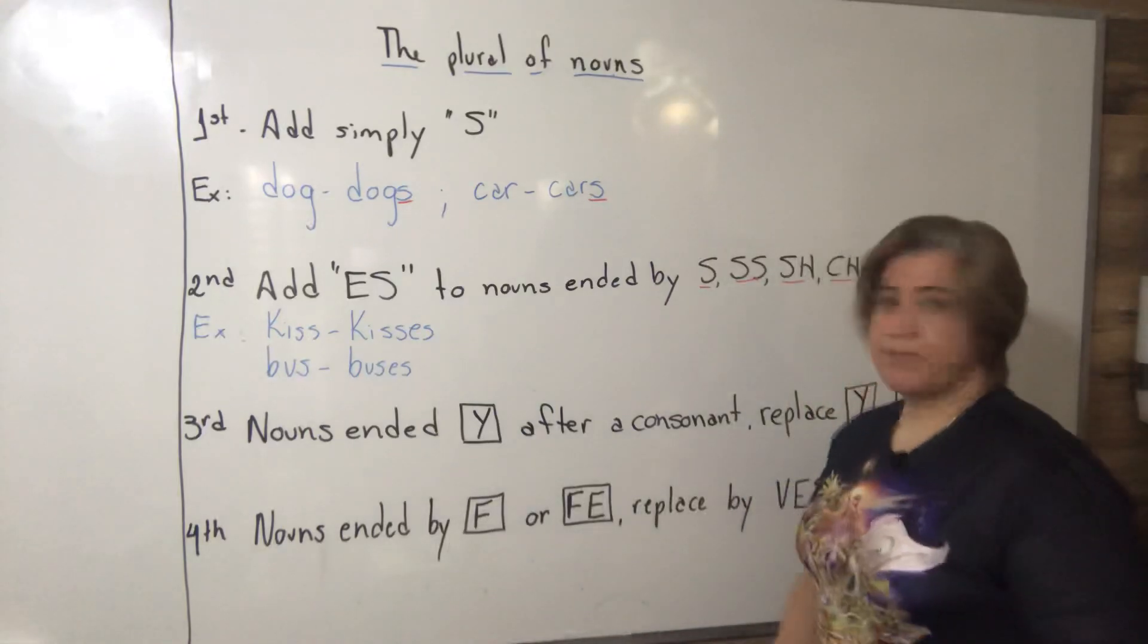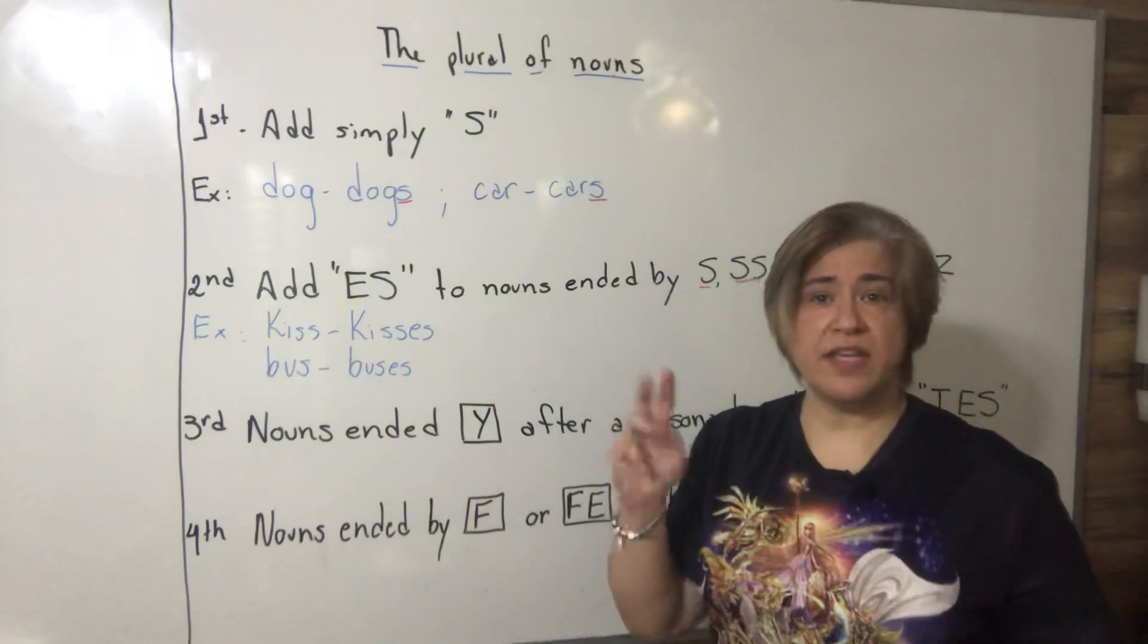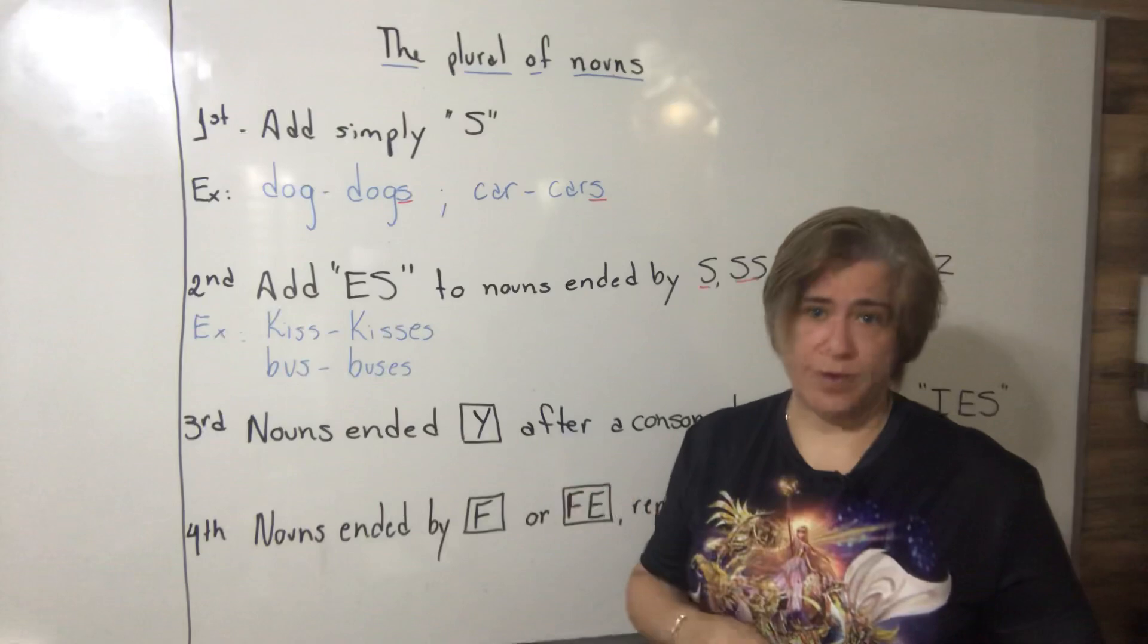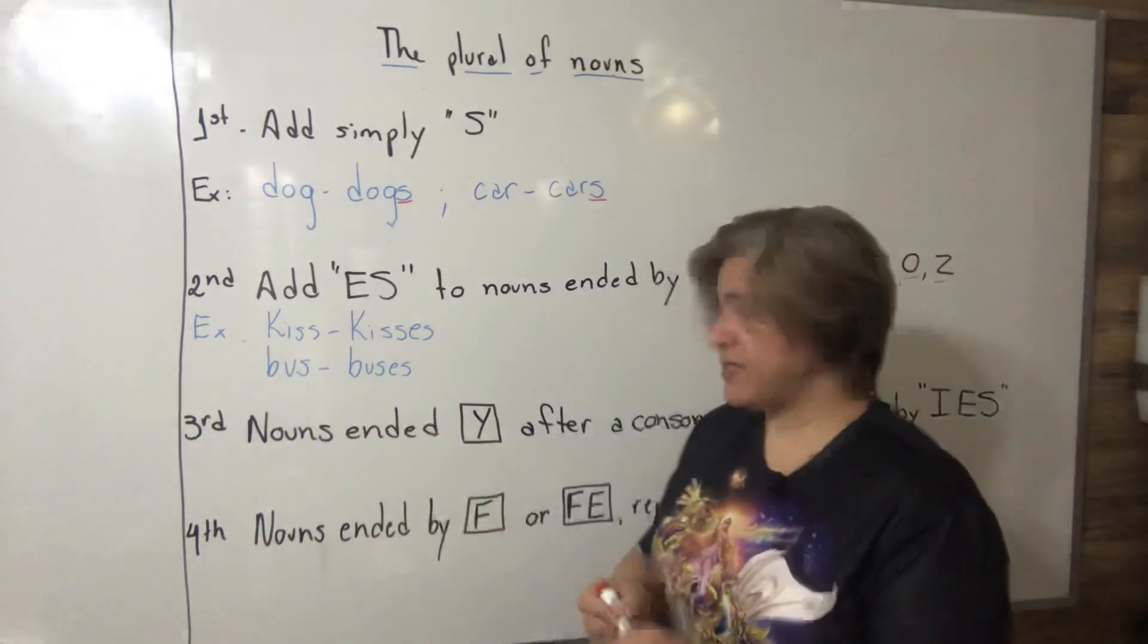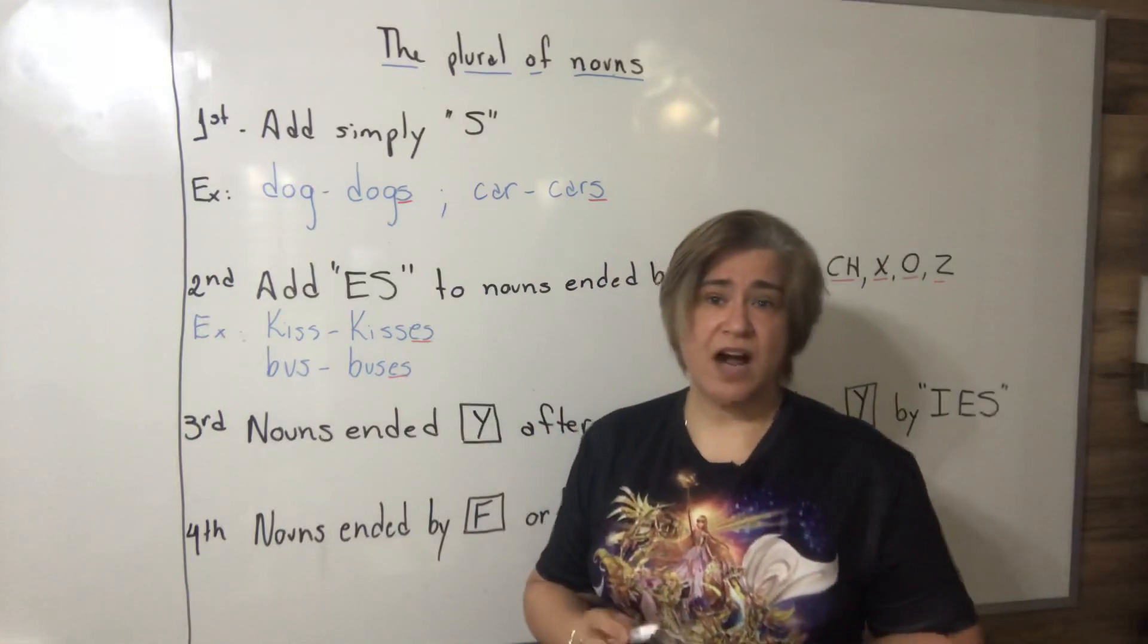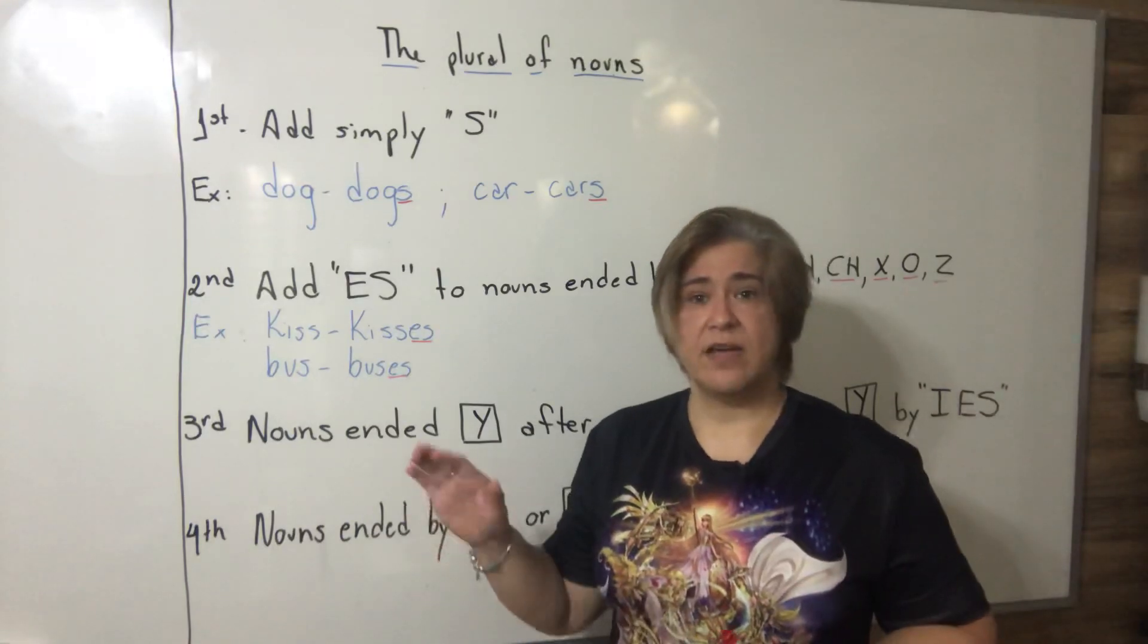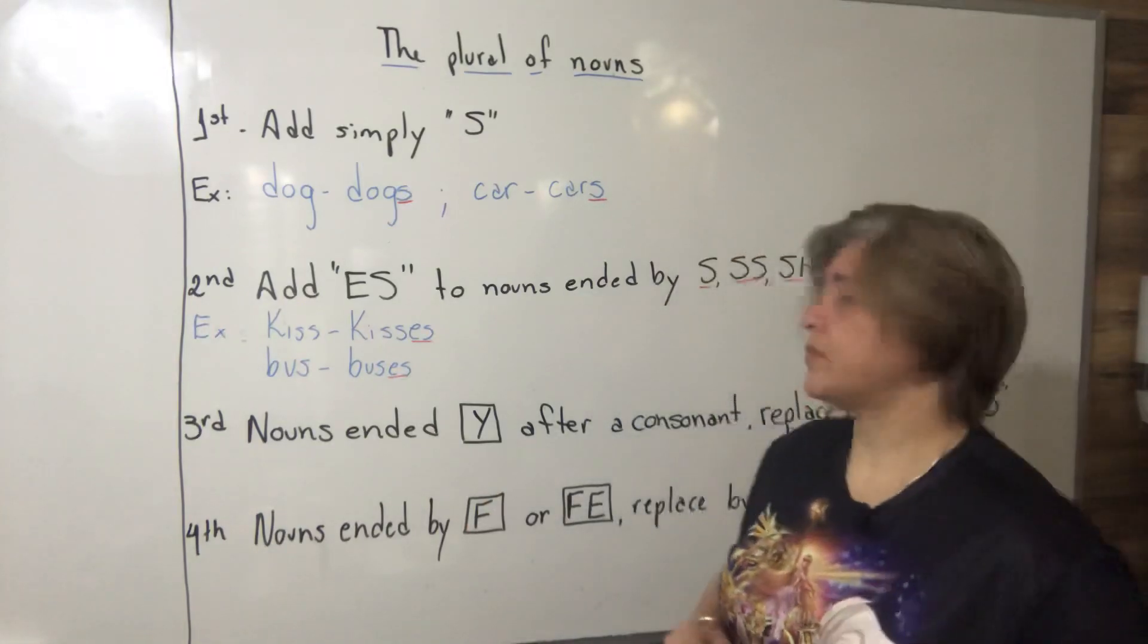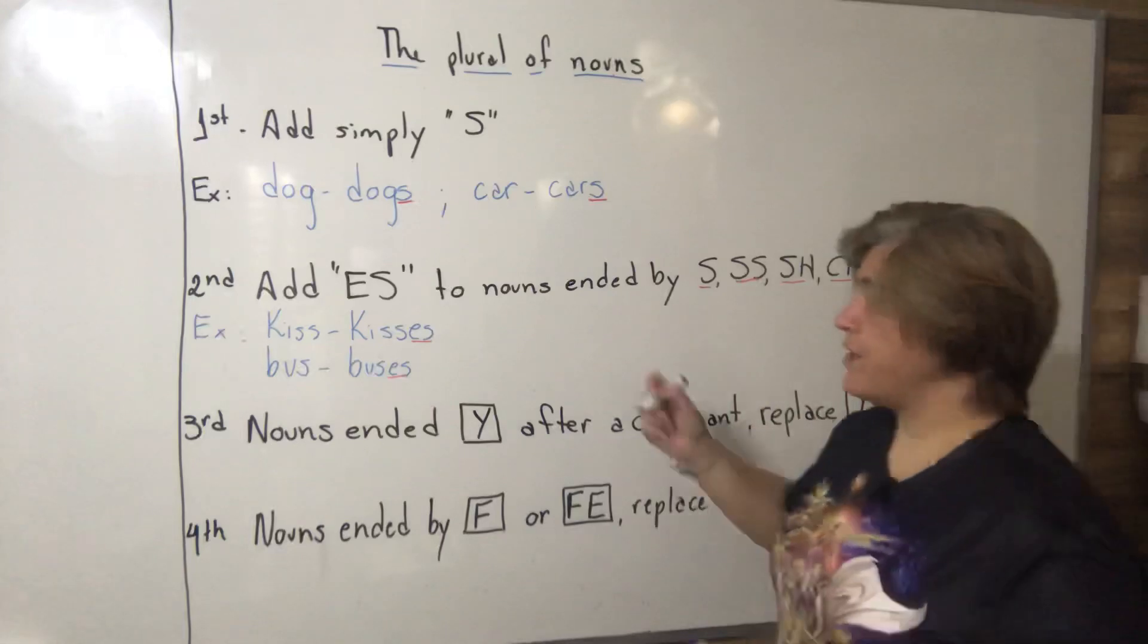So the girl gave three kisses on the cheeks of that boy. Bus, buses - we are adding ES. The buses are stopping at that bus stop on Guilherme Cotching Avenue.